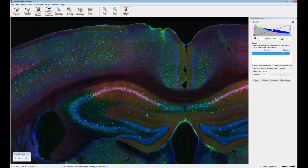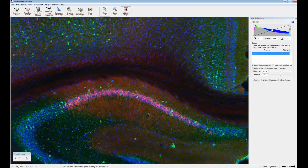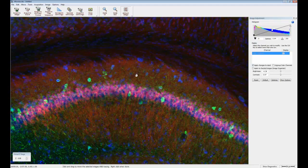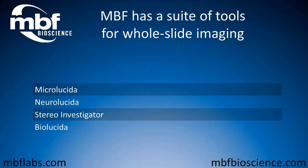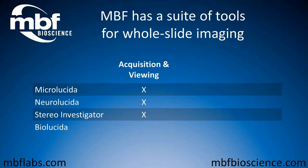Add whole slide imaging and analysis capabilities to an MBF system for higher throughput, easier slide storage, and accurate results for your next publication. MBF Bioscience has a suite of tools for whole slide imaging. To acquire and view 2D and 3D whole slide images, use MicroLucida, NeuroLucida, or Stereo Investigator equipped with the Virtual Tissue Extension module. For sharing and storing 2D and 3D whole slide images, use BioLucida Cloud. For analysis of 2D and 3D whole slide images, use NeuroLucida or Stereo Investigator.